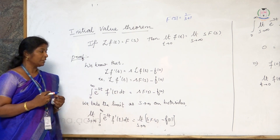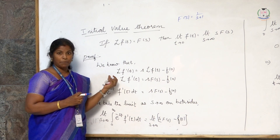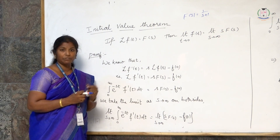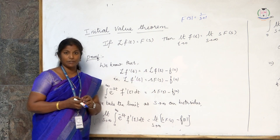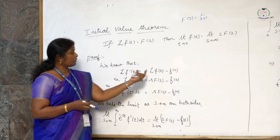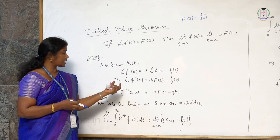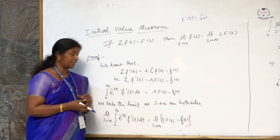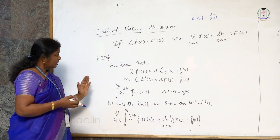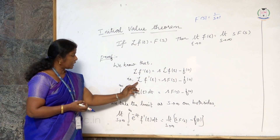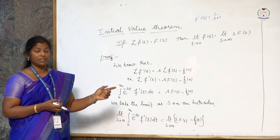Let us see the proof of the theorem. To prove this theorem, we are going to recollect one of the results in Laplace transform, which is the Laplace transform of a derivative function f'(t). So, L of f'(t) is equal to s·L of f(t) minus f(0). Using the notation L of f(t) as F(s), we get: L of f'(t) is s·F(s) minus f(0). Now let us use this statement to prove the initial value theorem. By the definition of Laplace transform, L of f'(t) is the integral from 0 to infinity of e^(−st)·f'(t) dt.